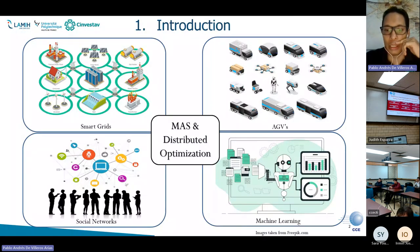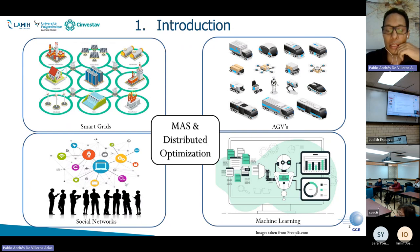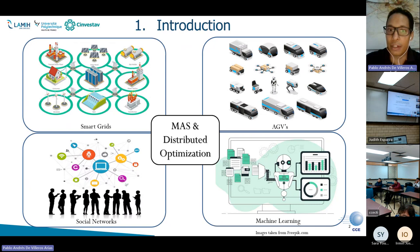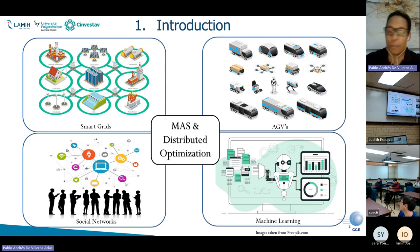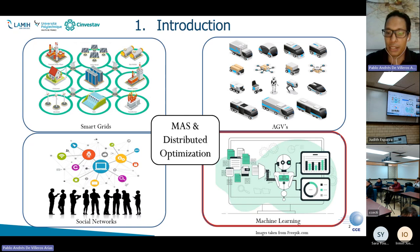As you saw before in the plenary lecture yesterday by Dr. Ocampo, distributed optimization has become a very important topic these days. Maybe during the last decade, there has been an explosion of algorithms. You can see many applications of distributed optimization in smart grids, social networks, and robotic systems. Today, I'm going to talk about two particular subjects of machine learning, which are regression and classification.